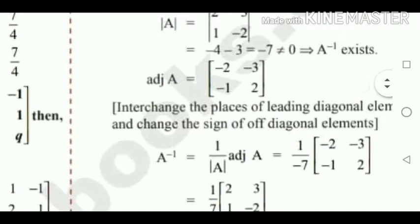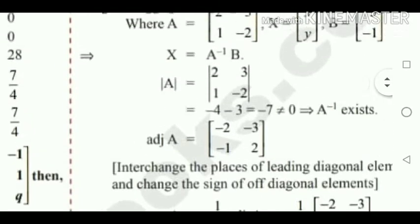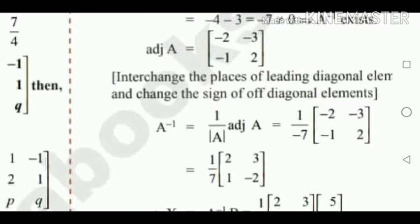Adjoint of A: interchange the places of the leading diagonal elements and change the sign of the off-diagonal elements to get the adjoint. Adjoint of A is minus 2, minus 3, minus 1, 2. The main diagonal becomes minus 2 and 2, and the off-diagonal is 3 and 1 with changed signs. Then A inverse equals 1 by determinant of A into adjoint of A, which is 1 by minus 7 into the matrix minus 2, minus 3, minus 1, plus 2.